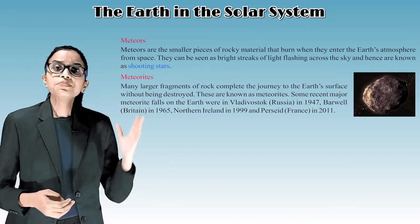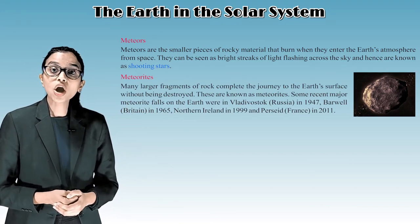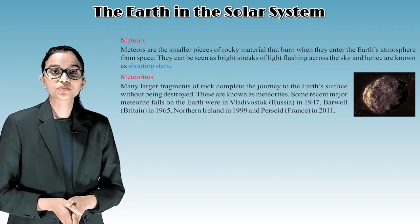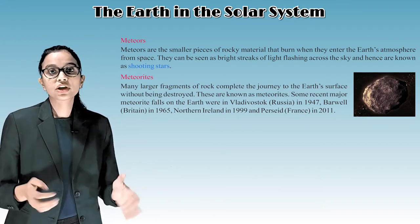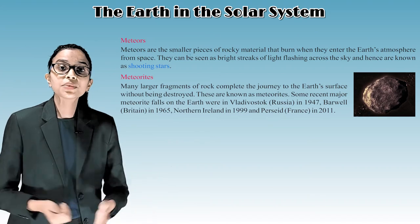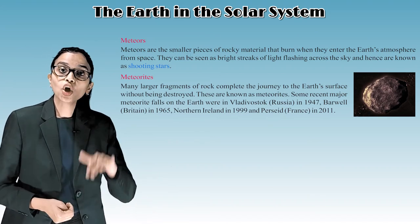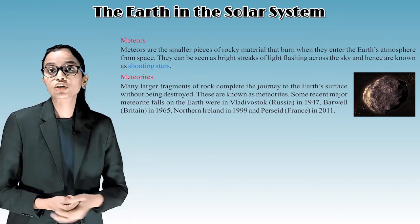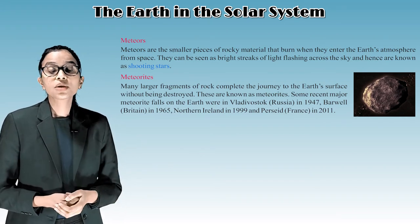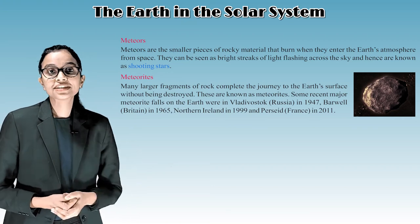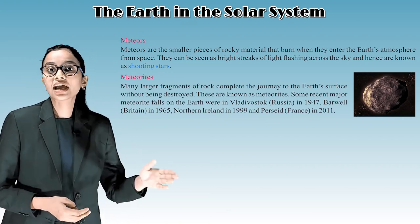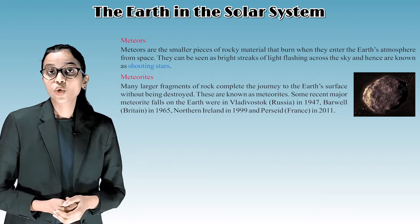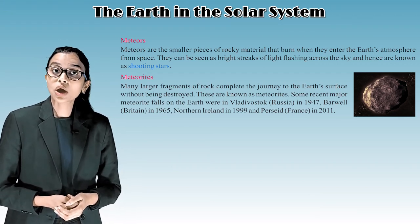Meteorites. Many larger fragments of rock complete the journey to the Earth's surface without being destroyed. These are known as meteorites. Some recent major meteorite falls on the Earth were in Vladivostok, Russia in 1947, Barwell, Britain in 1965, Northern Ireland in 1999, and Draveil, France in 2011.